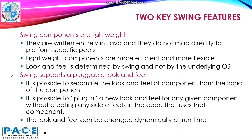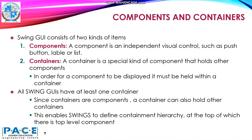The look and feel can be changed dynamically at runtime. Swing UI consists of two kinds of items: components and containers. A component is an independent visual control such as a push button, label, or a list. A container is a special kind of component that holds other components. In order for a component to be displayed, it must be held within a container. All Swing GUIs have at least one container. Since containers are also components, a container can also hold other containers. This enables Swing to define a containment hierarchy, at the top of which there is a top-level component.